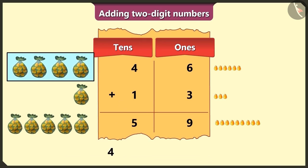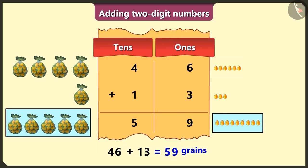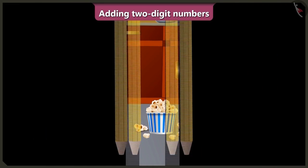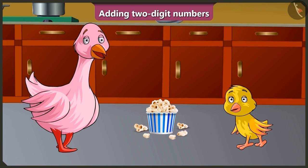Here, if we add 4 tens and 6 grains to 1 ten and 3 grains, then we get a total of 59 grains. Yes, well done, Pilu. So come on. Now, eat this popcorn. I will just be back from the market.